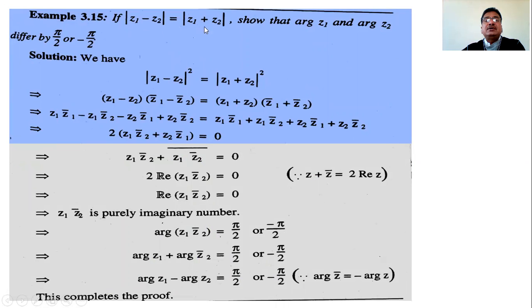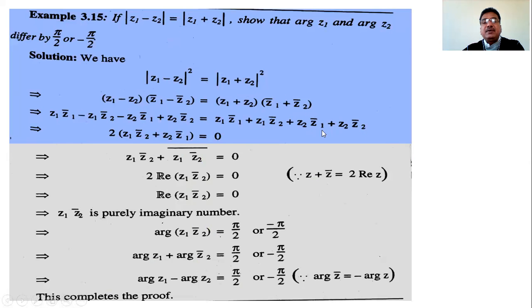Next: if |z1 - z2| = |z1 + z2|, show that arg(z1) and arg(z2) differ by π/2 or -π/2. Square both sides: |z1 - z2|² = |z1 + z2|². Apply |Z|² = Z·Z̄, expand both sides, and cancel common terms z1·z̄1 and z2·z̄2.